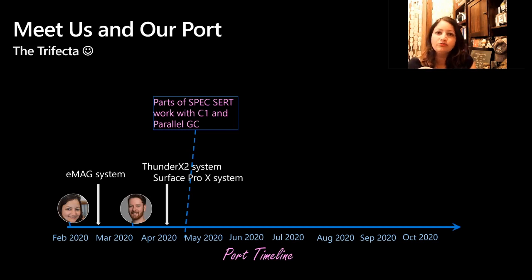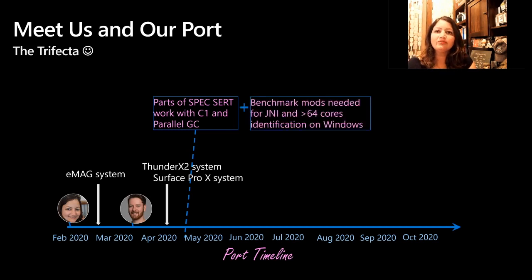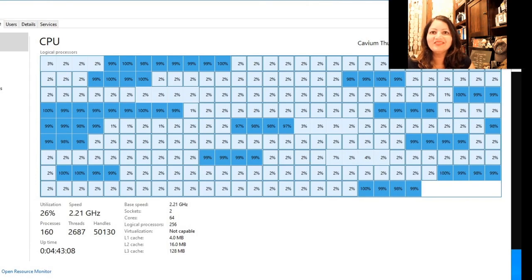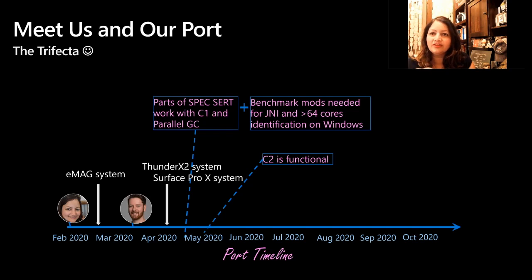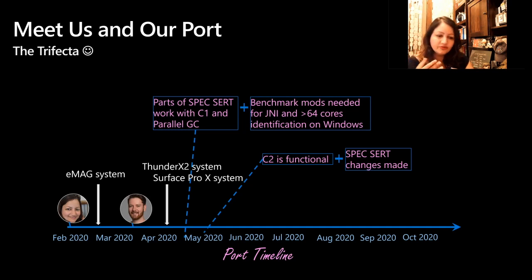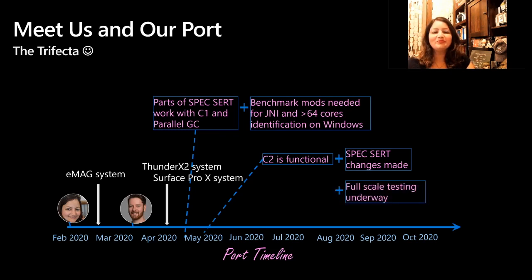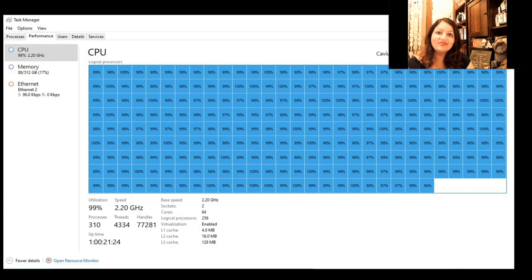Around the same time, we realized we needed to make some benchmark modifications and enable support for more than 64 cores. When we tried the benchmark on ThunderX2 — with 256 hardware threads — we could only fire up 64 cores. By mid-May, thanks to Ludovic, we had C2 fully functional, and I made changes to SPECjbb to handle JNI code and more-than-64-core identification. We then started full-scale testing, and this is how CPU utilization looked while running the SPECjbb benchmark.